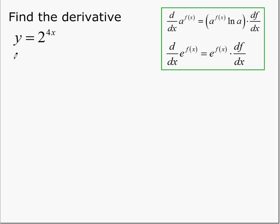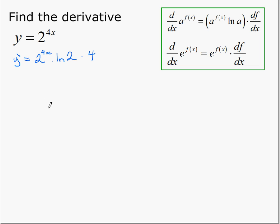So the answer then: the derivative is the same function repeated, multiplied by the natural log of the base. The chain rule then says times the derivative of the exponent, which in this case is 4. Other than writing these in a different order, there's nothing else to simplify — that's the answer.